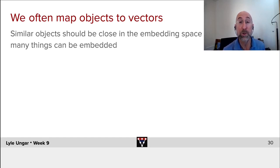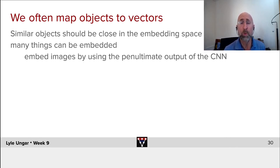Lots of things can be embedded. You might think images don't need to be embedded because an image is already a vector, but that's wrong. Two images may be quite different in pixel space, but if you take the output of their penultimate layer, the last set of activations before the softmax, the embedding outputs may be more similar.